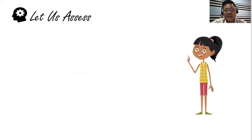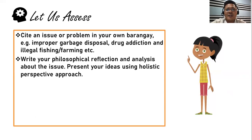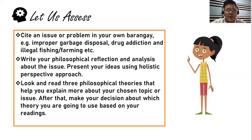Now let's try to assess whether you have understood our topic. Use the separate sheets for your answer — you will be evaluated using a rubric. Cite an issue or problem in your own barangay, for example: improper garbage disposal, drug addiction, illegal fishing, or farming, or others that you observe in your barangay. Write your philosophical reflection and analyze the issue. Present your ideas using a holistic perspective approach. Look up and read three philosophical theories that will help you explain more about your chosen topic. After that, make your decision about which theory you are going to use based on your readings.